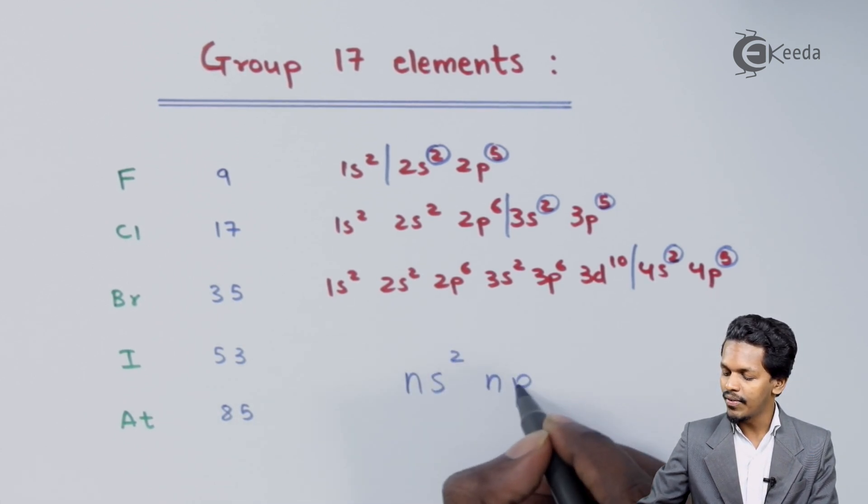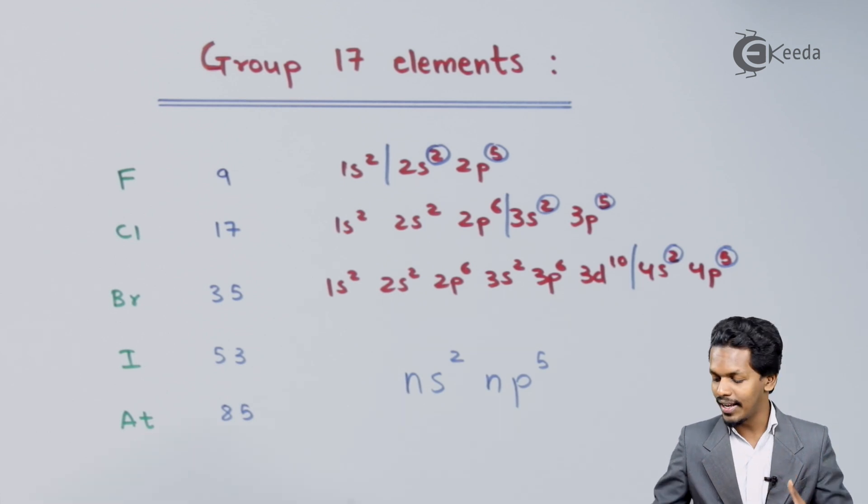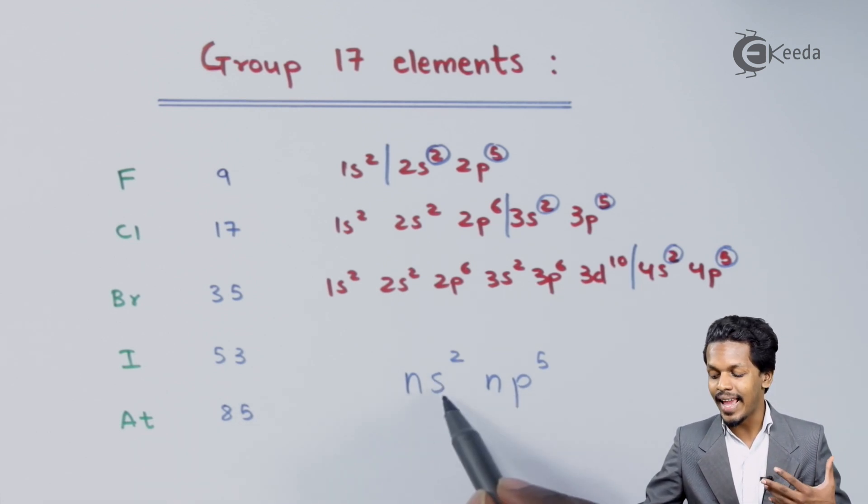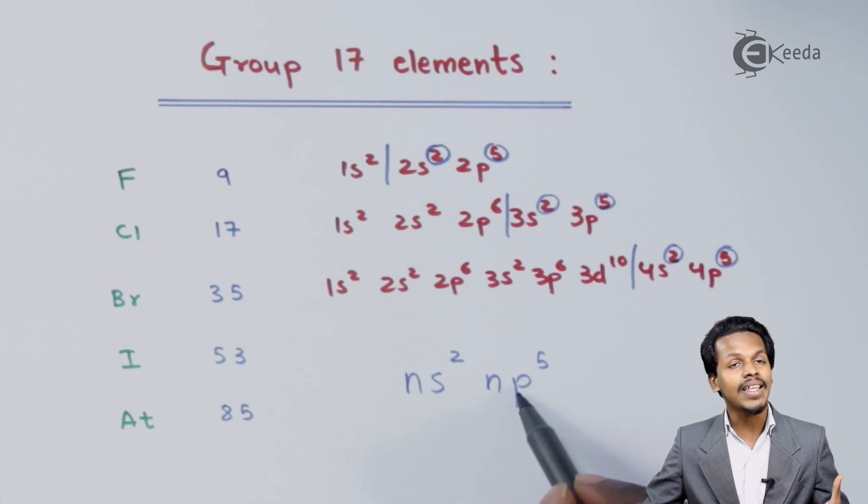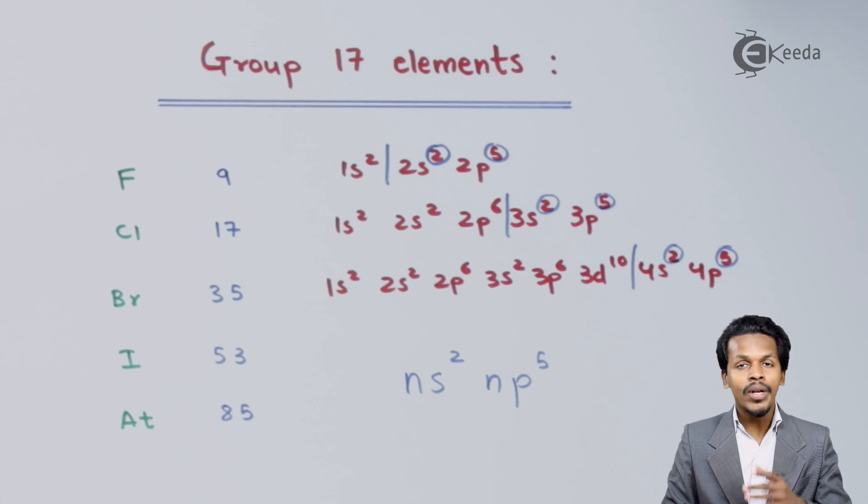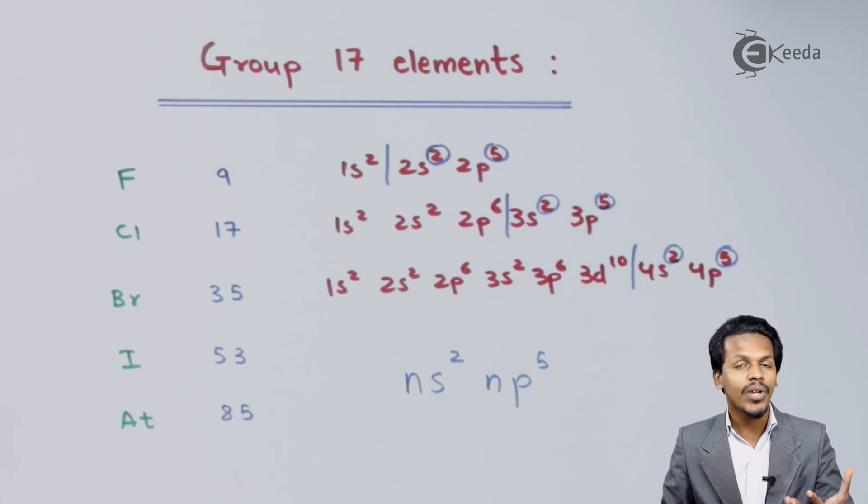Where n represents the outermost shell, s means the s-orbital or s-subshell, and p is the p-subshell. The p-subshell consists of 5 electrons, so only 1 electron is left out to give a complete octet. That's the reason all these elements are highly electronegative.